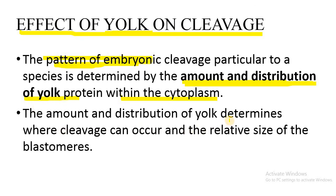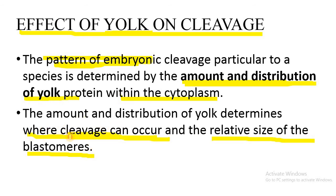The amount and distribution of yolk determines where cleavage can occur and the relative size of the blastomeres. Where yolk concentration is higher, cellular or mitotic division will be slower.